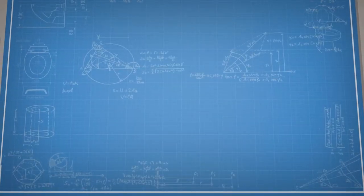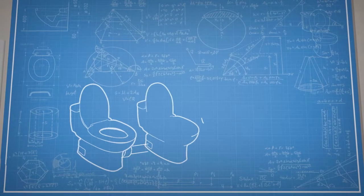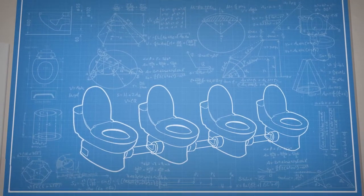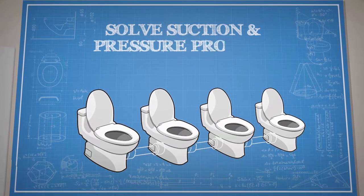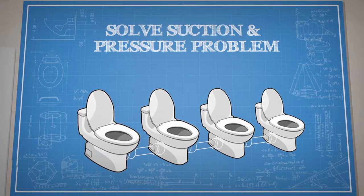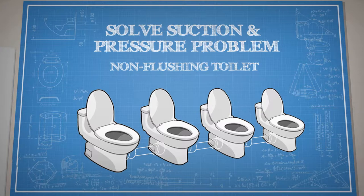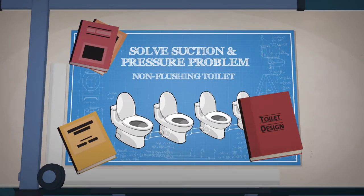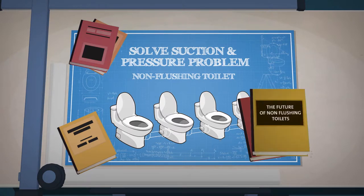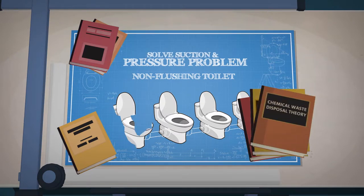EnviroLoo identified technical challenges in developing an interconnected system for larger buildings based on their eco-friendly technology. These challenges involved the suction and pressure required for waste removal from a system of non-flushing toilets rather than a single unit. EnviroLoo undertook literature searches and consulted with experts and found that the answer to these challenges did not currently exist.